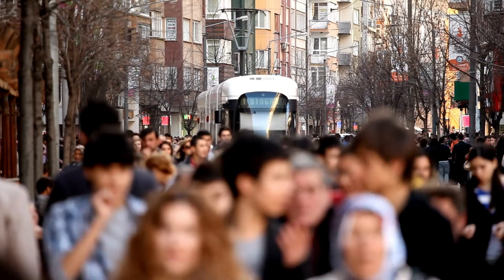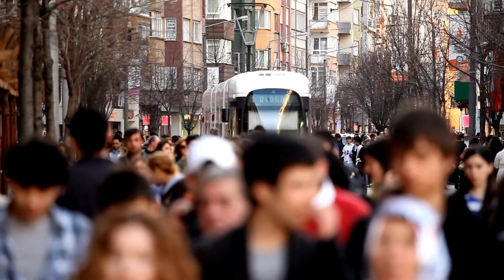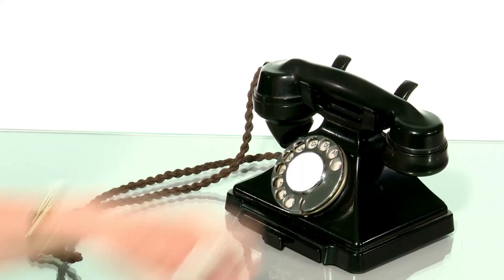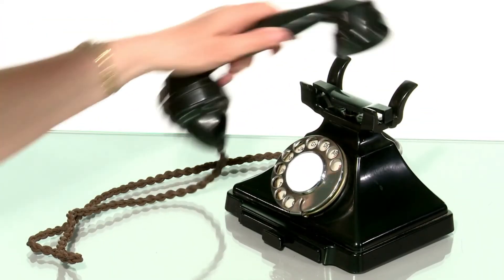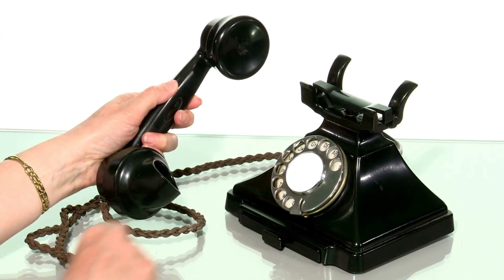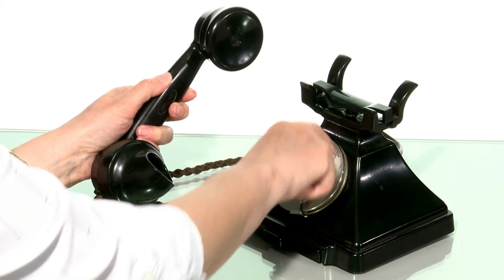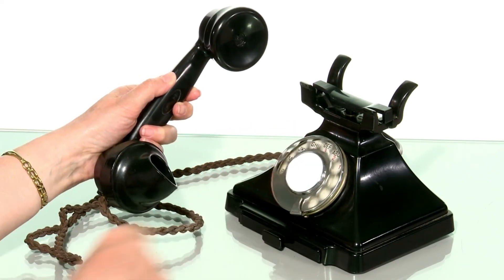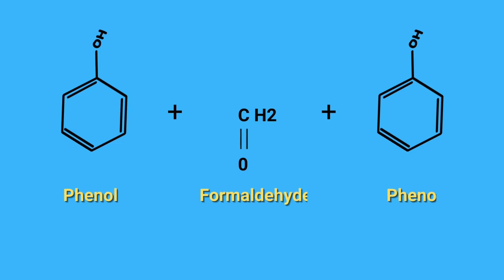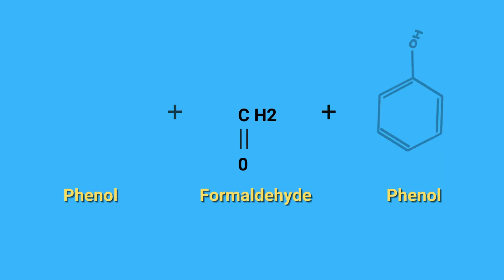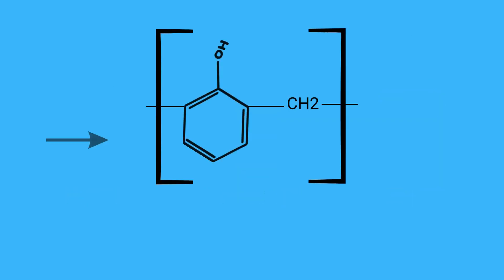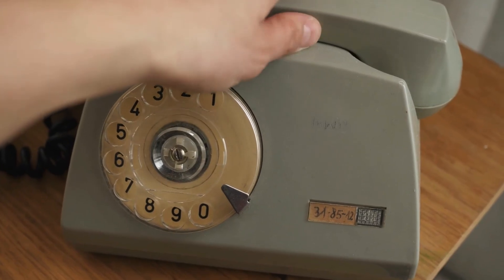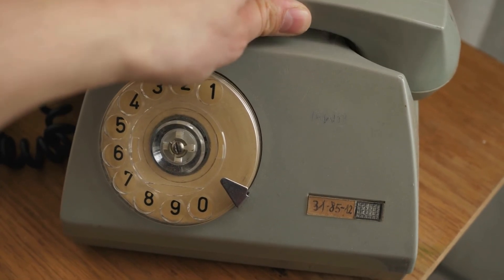But when did the use of plastic begin? Bakelite is considered the first plastic, or the first truly synthetic polymer, and was created in 1907 by Leo Baekeland. Its formation occurred from the reaction between phenol and formaldehyde, presenting hardness, resistance to heat, and electricity.